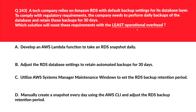Let's minimize operational overhead — operational excellence is one of the key pillars. Option A says develop an AWS Lambda function to take an RDS snapshot daily. Writing an AWS Lambda function to create an RDS snapshot every day adds unnecessary operational overhead, which we don't want. Let's reject this. Option B says adjust the RDS database settings to retain automated backups for 30 days. Modifying RDS to have a 30-day retention period for automated backups meets the requirement with the least operational overhead. Let's park this option.